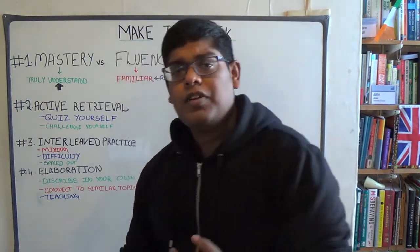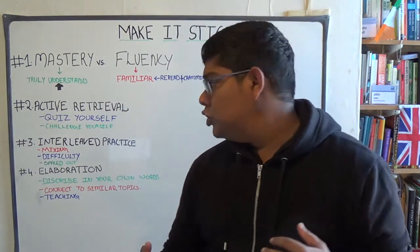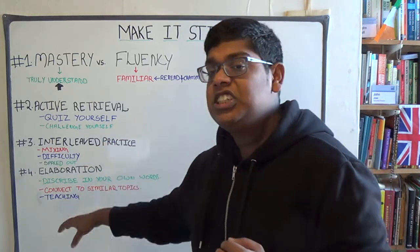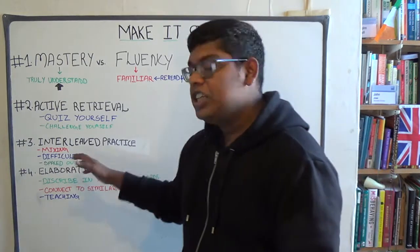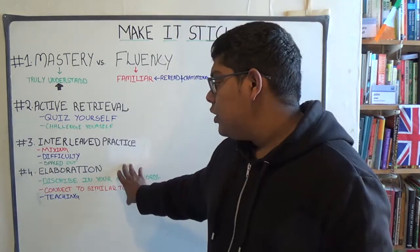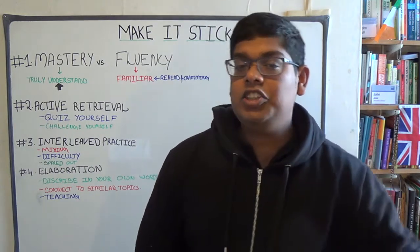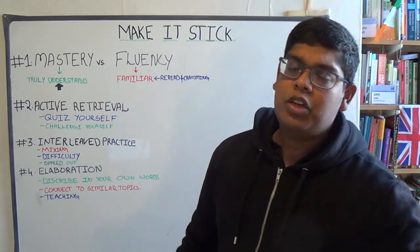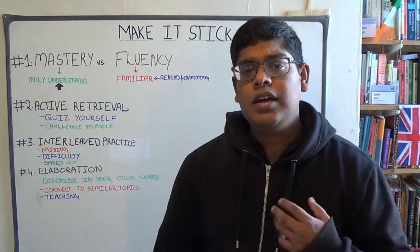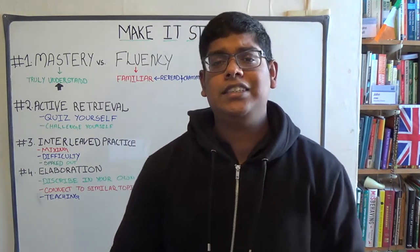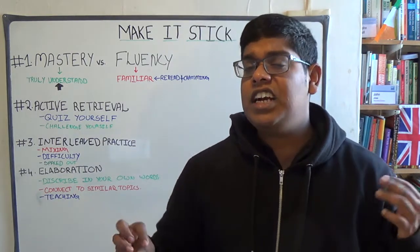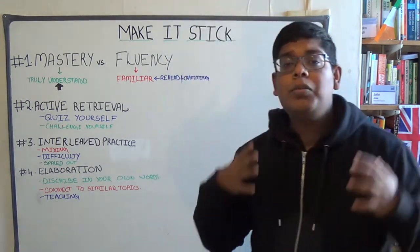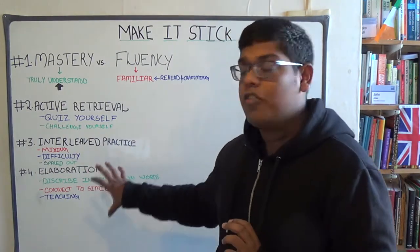Another aspect of elaboration is to teach. Teaching is the best way because you automatically do active retrieval — you're retrieving whatever you're trying to study — and you are also interleaving, since teaching is a different practice to learn. You are challenging yourself because it is very hard to teach someone. Teaching is a part of elaboration where you can teach yourself, your parents, your relatives, or even a lifeless object like a laptop. The best way to teach is as if they are five years old because you have to explain it in the most basic, understandable format, which makes your brain work more and makes you more of a master.